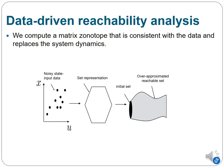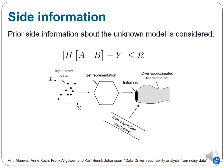A matrix zonotope that's consistent with the data and replaces the system dynamics, and then use this matrix zonotope in a recursion to propagate the reachable region forward. Matrix zonotope is a kind of set representation to consider prior side information about the unknown model.